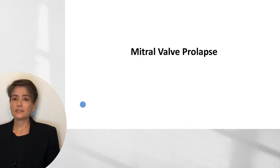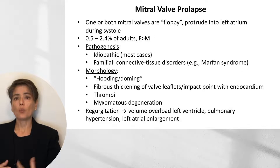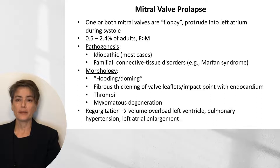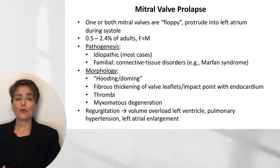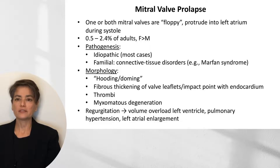The last condition to discuss is mitral valve prolapse. In mitral valve prolapse, one or both mitral valve leaflets are floppy and protrude into the left atrium during systole. It is fairly common, affecting about 0.5 to 2.4% of adults, and tends to affect females. Most cases are idiopathic, though there are familial cases associated with connective tissue disorders such as Marfan syndrome. Grossly, we see hooding or doming of the valve leaflets, as well as fibrous thickening of the leaflets or at the impact point with the endocardium, and thrombi can form here as well.